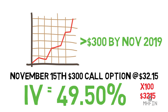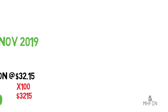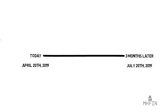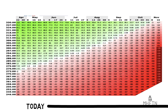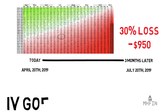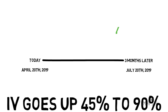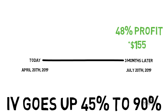This particular option has an implied volatility of 49.50%. Now, to demonstrate the effects of implied volatility, let's pretend the stock's price doesn't move and stays exactly the same for two months, and implied volatility also stays exactly the same. In this scenario, our option would be worth 30% less if we went to sell it, and we'd lose approximately $950. Now let's change the scenario: everything stays the same, but IV goes from 49.50% to 90%. In this case, if we sold our option after holding it for just two months, we'd make a 48% return and profit approximately $1,550.